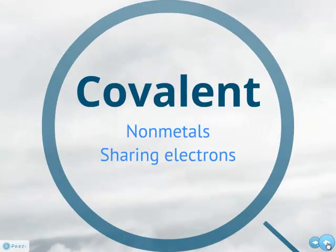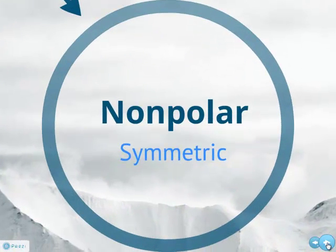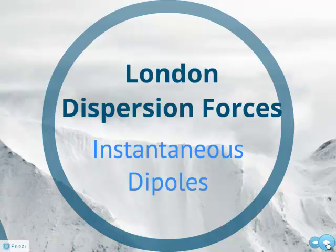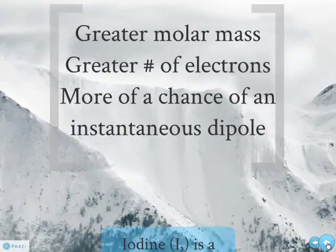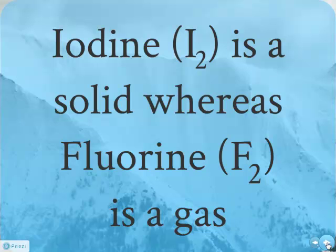Coming back to covalent — we said we can have polar and nonpolar. Nonpolar substances may have polar bonds, but they are symmetric, which means everything's canceling out. If you're nonpolar, right away you know you're going to have London dispersion forces. London dispersion forces means we have instantaneous dipole moments. How do you tell the difference between two substances that are both London dispersion forces? The greater molar mass — which means the greater number of electrons — gives you more of a chance of an instantaneous dipole, and that means a higher boiling point. For example, iodine is a solid at room temperature where fluorine is a gas, because iodine has more electrons, giving it more of an instantaneous dipole.